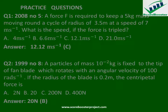The next practice question comes from 1999, number 8. A particle of mass 10 to the power of minus 2 kilograms is fixed to the tip of a fan blade which rotates with an angular velocity of R radians per second. If the radius of the blade is 0.2 meters, the centripetal force is what? The expected answer is 20 Newtons, which is option B.